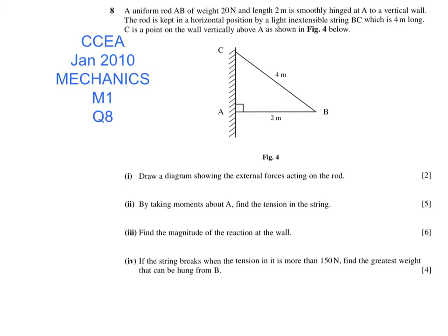January 2010, M1 question 8, the moments question with a hinge. I'll start by drawing my force diagram, so I have the beam, tension in the string, the weight acting down, and then I have a hinge. I'm going to represent my hinge by two forces, a horizontal component X and a vertical component Y, and I'm going to say that the tension is at an angle theta.